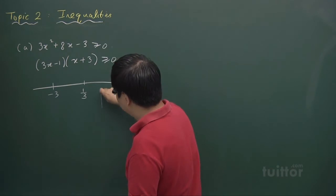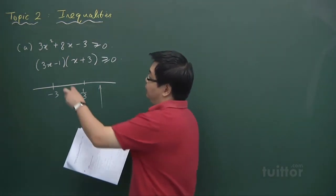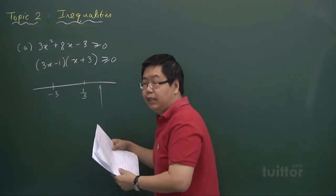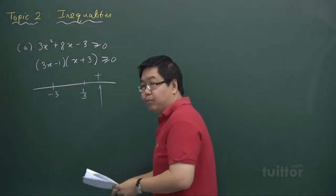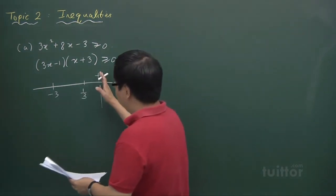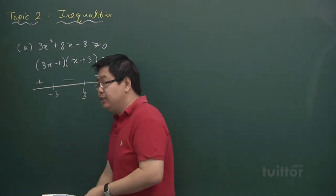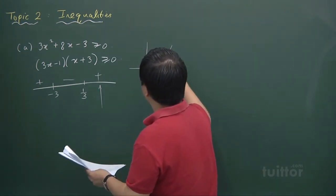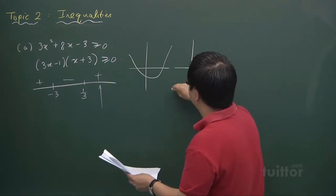Then choose a value of x greater than one third — say x = 5. Substituting x = 5 into each factor, both terms are positive, so their product is positive. For quadratic curves with two roots, the sign alternates between regions, so if the rightmost region is positive, the middle is negative, and the leftmost is positive again.